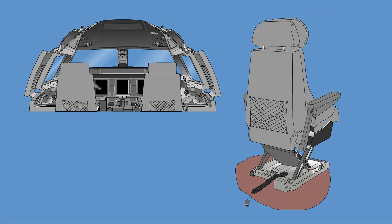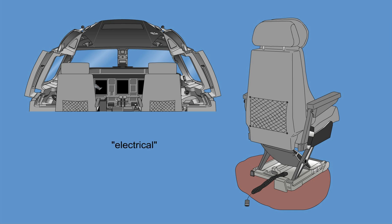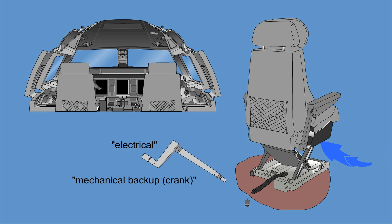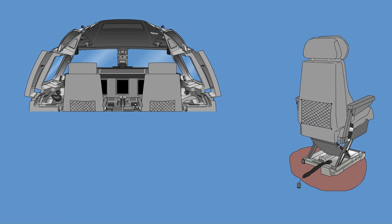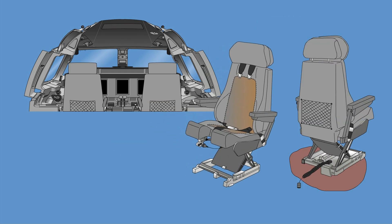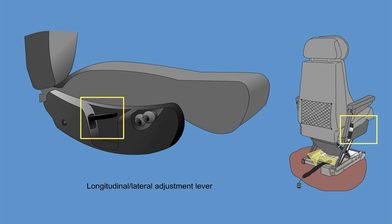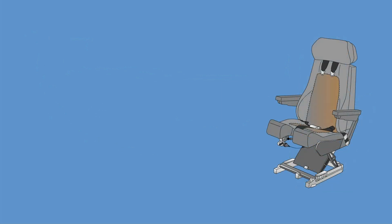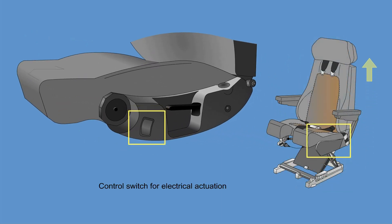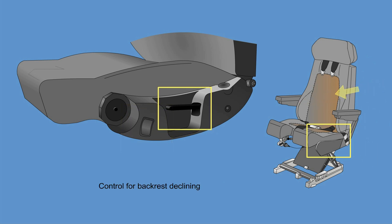A vertical seat adjustment allows the pilot or co-pilot to properly adjust their eyes to the cockpit environment. The height adjustment is made by means of an electrical actuator operated by a control switch on the seat. A mechanical backup — a crank — is provided for height adjustment in case the electrical system is not available. The seats are identical in design and operation, differing only in the symmetrical arrangement of controls. They feature a longitudinal lateral adjustment lever with mechanical operation, and a control switch for electrical actuation of seat height with mechanical backup. The backrest reclining control uses hydromechanical operation.